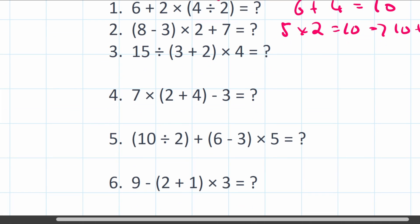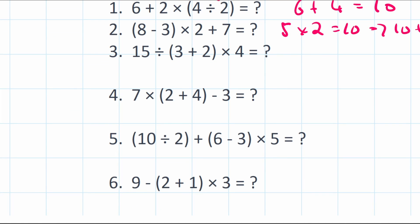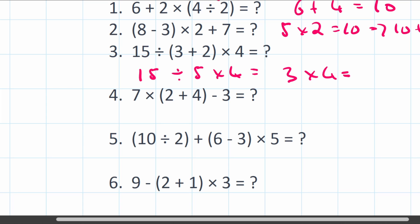Question 3: 15 divided by (3 plus 2) multiplied by 4. Brackets first: 3 plus 2 equals 5. So we have 15 divided by 5 multiplied by 4. Division comes first reading left to right: 15 divided by 5 equals 3. Then 3 multiplied by 4 equals 12.